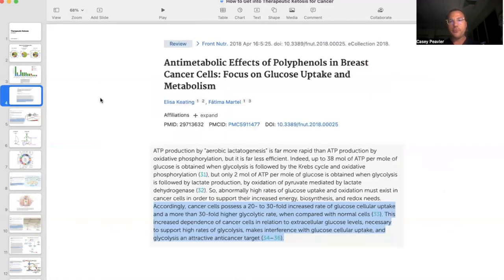So remember, as we've talked about in the past, cancer cells possess the ability to bring in about 20 to 30 times more glucose than a regular cell, and it's going to break down that glucose through glycolysis about 30 times higher rate than normal cells.